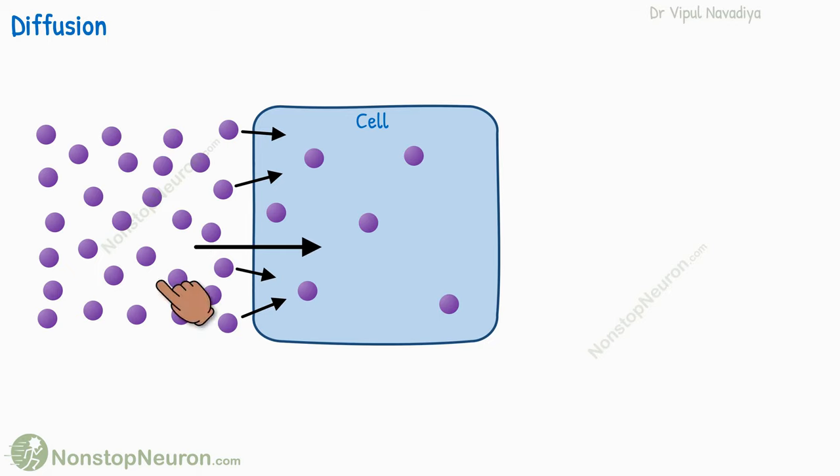For example, here the concentration of this substance is high outside the cell than inside. So diffusion leads to net movement from outside to inside.